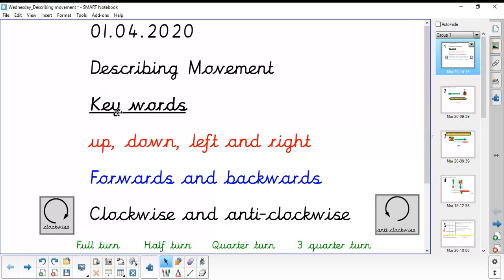Over the last two days we've had a look at some key words. They've so far been up, down, left and right, forwards and backwards, clockwise, moving round a clock like normal and anticlockwise, moving the opposite direction the way that a clock moves. We also have full turn, half turn, quarter turn and three quarter turn.